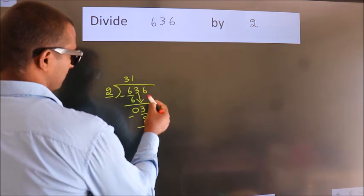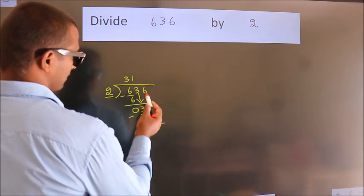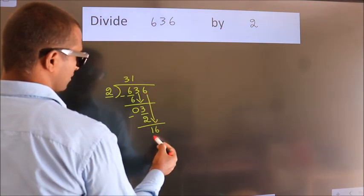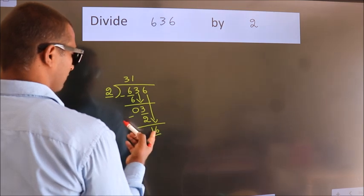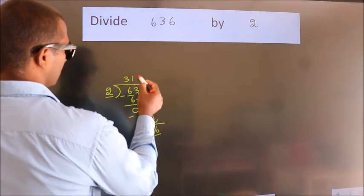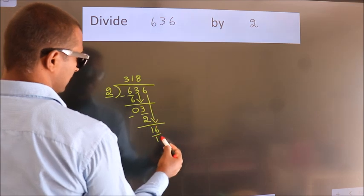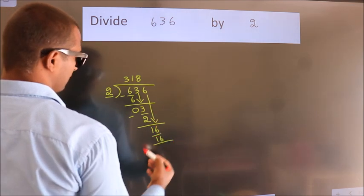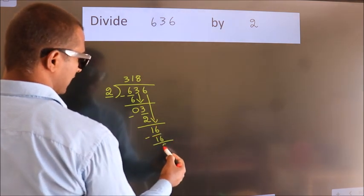After this, bring down the beside number. So, 6 down. So, 16. When do we get 16? In 2 table, 2 8s, 16. Now we subtract. We get 0.